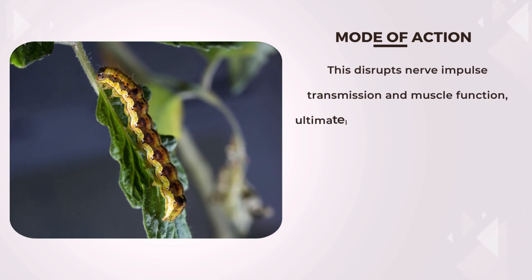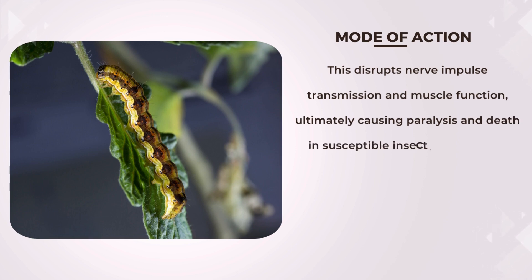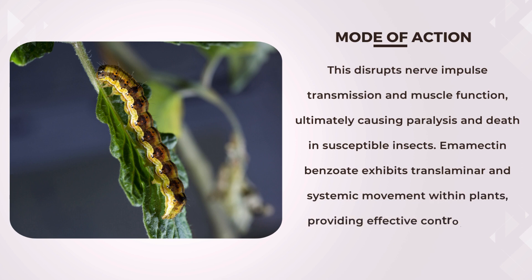This ultimately causes paralysis and death in susceptible insects. Emamectin benzoate exhibits translaminar and systemic movement within plants, providing effective control of both foliar feeding and sap-sucking insects.